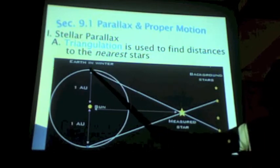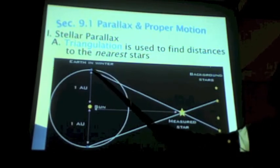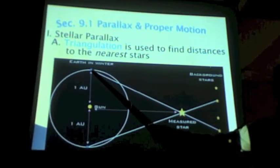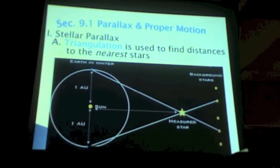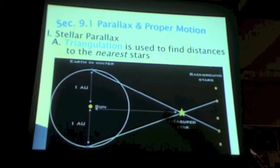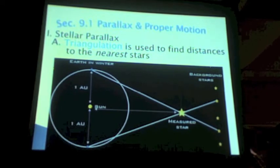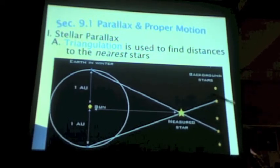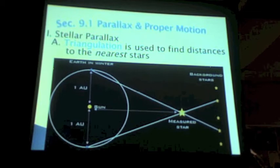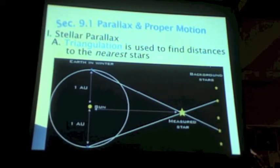So what happens is, when we're looking at a star here in the wintertime, that's kind of like looking with your left eye. And when we come around here six months later in the summertime, and we look at the same star, that's kind of like looking with your right eye. And that star that's nearby will seem to shift compared to stars that are farther away.